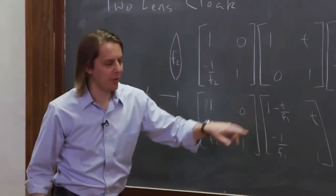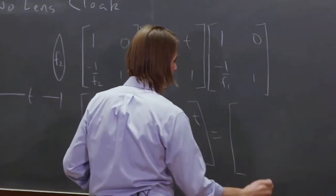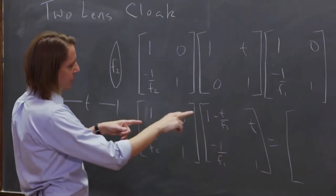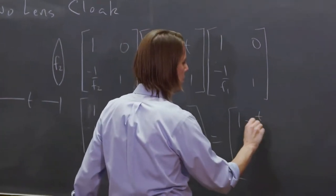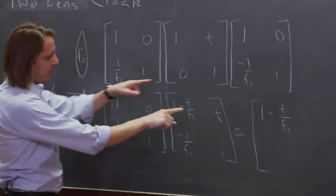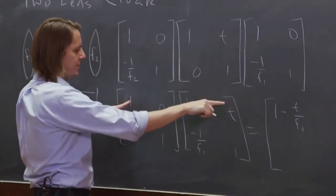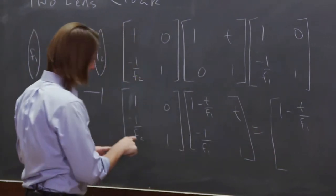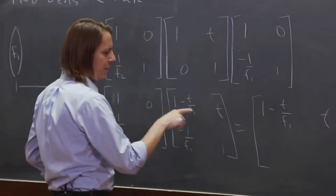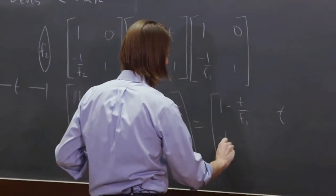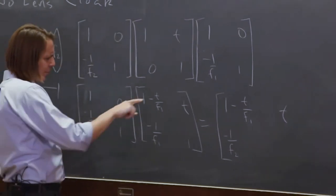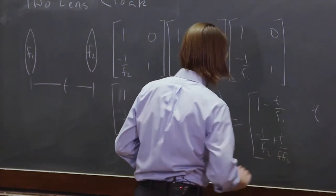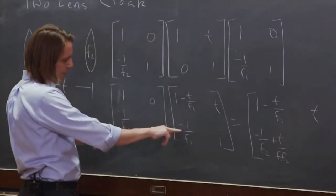All right, so now we multiply this one by this one. And then we have our final matrix. So this is 0 times that, so 1 minus T over F1 again. And this is just T, 1 times T plus 0 times 1. And this term is minus 1 over F2 times all of that. So times 1 is minus 1 over F2 plus T over F1 F2 minus 1 over F1.